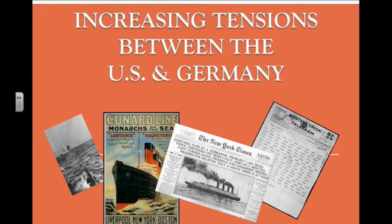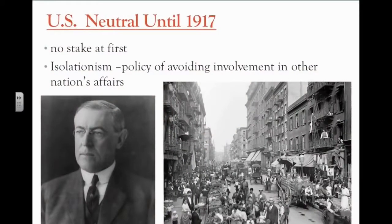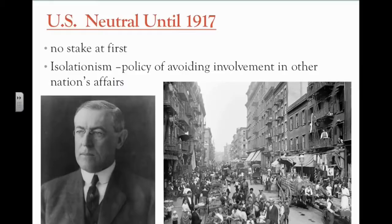Increasing Tensions Between the United States and Germany. When World War I began, the United States was neutral, or stayed out of the conflict. The U.S. continued to be neutral until 1917. President Wilson had decided to follow the traditional American political belief of isolationism, which is the policy of avoiding involvement in other nations' affairs. President Wilson urged the public to be impartial in thought as well as action. Many Americans saw the war as a European conflict and not an American one. Additionally, with the high population of recent immigrants from all over the world in American cities, loyalties could be tested. For example, 8 million Americans had one or more parents who had been born in Germany or Austria.